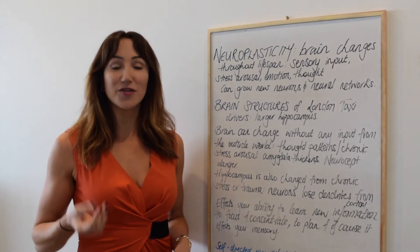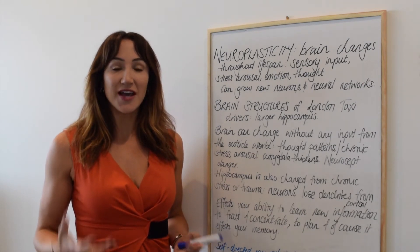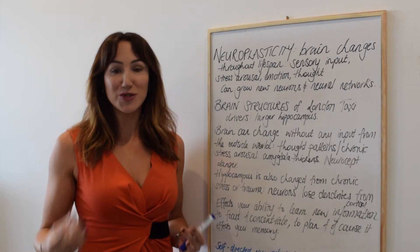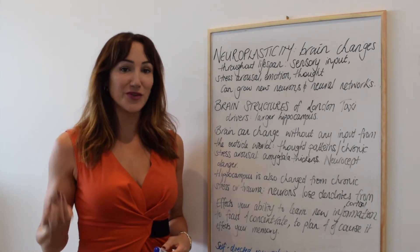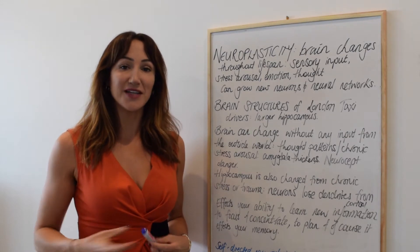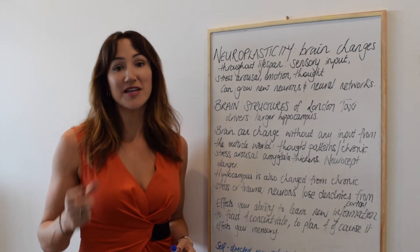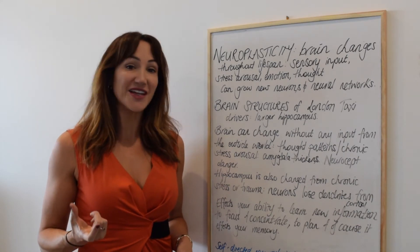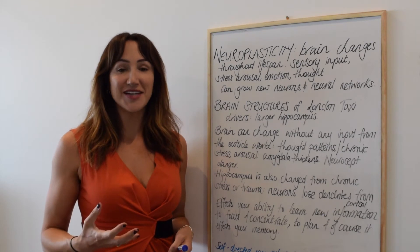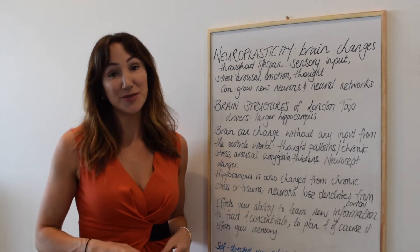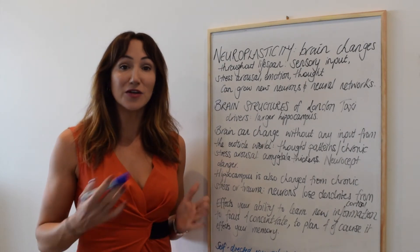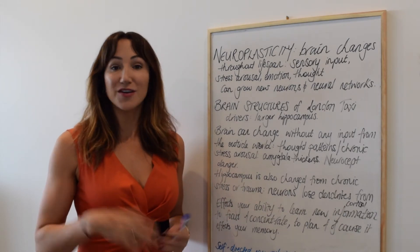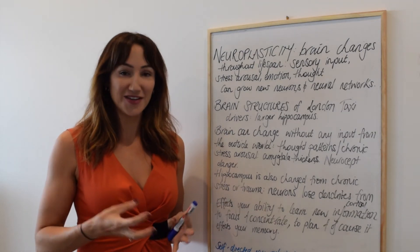The adult brain grows new neurons, which are nerve cells, and it can also form new neural networks or connections between those neurons. A recent study showed some really interesting findings where they looked at the brains of London taxi drivers. They examined the hippocampus, which is an area to do with memory, and found that the longer the participants had been driving, the thicker the hippocampus became, meaning they had grown new neurons and made new connections.